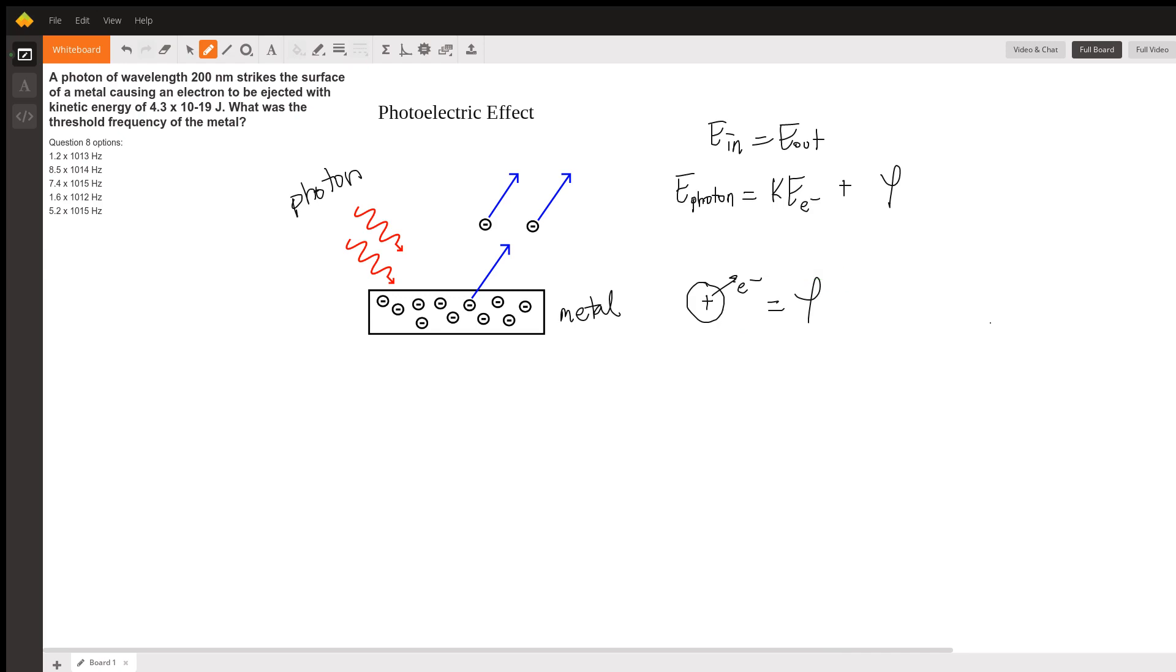With some basic substitutions from our basic ideas with light, we know that the energy of a photon is equal to Planck's constant times the frequency of that photon. They don't give us the frequency of the photon; they give us the wavelength of the photon.